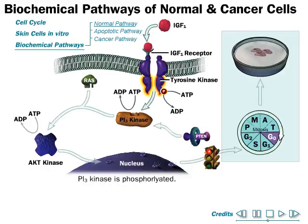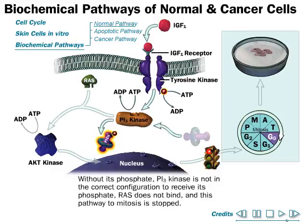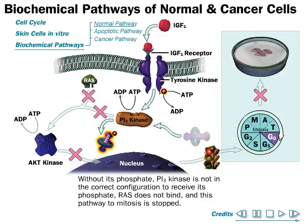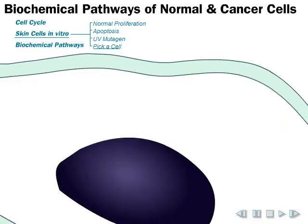When IGF binds to the membrane receptor, tyrosine kinase is phosphorylated by ATP, which then phosphorylates PI3 kinase. At this point, PTEN (p10) comes into play: it approaches the PI3 kinase phosphate link, binds to the phosphate group, and removes it from PI3 kinase. Without its phosphate, PI3 kinase is not in the correct configuration to receive the Ras protein, so Ras does not bind and the pathway to mitosis is stopped — a red signal in this traffic analogy.